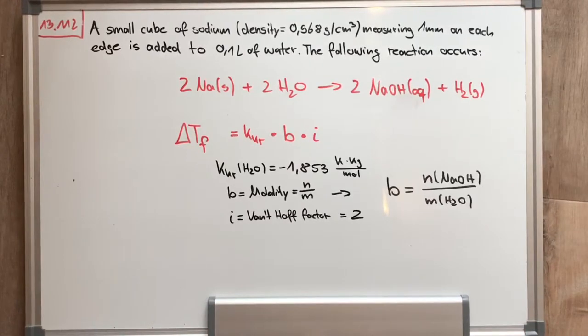The molality b is the molar amount of caustic soda divided by the mass of the solvent, which is in this reaction water.